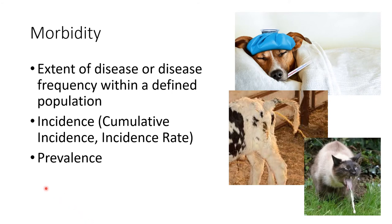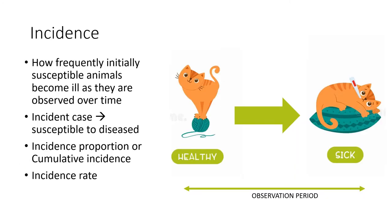With regards to measurement of health, what we most commonly measure is morbidity — the occurrence of disease. Morbidity is basically the extent of disease or the disease frequency within a defined population. We have two modes of measuring morbidity: we either check the number of new cases, which is incidence, or the number of cases regardless of whether they are new or not. For incidence, we look for how frequently initially susceptible animals become ill as they are observed over time.